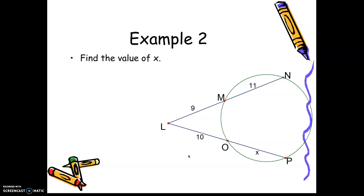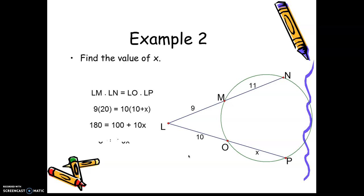Example 2 is where we have the two secants. The part on the outside is 9, times the whole length of that secant — 9 plus 11 is 20. Then your other secant would be 10, the part on the outside, times 10 plus X, the length of LP, the whole secant. You work through the equation and solve it for X — X is 8.